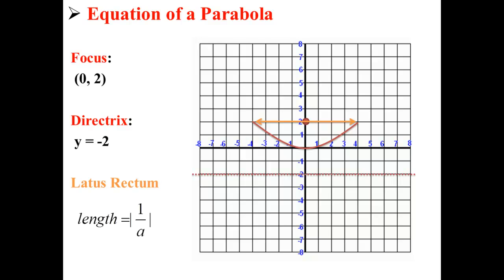For example, here we have the equation of a parabola. 8 = 1/a, so 1/8 = a, thus a = 1/8. This latus rectum specifies the width of our parabola. That's why if your a is smaller, you have a wider parabola, while if your a is larger, you have a more narrow parabola.